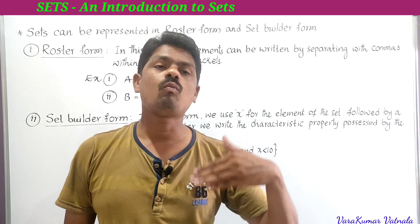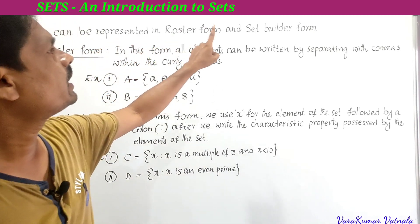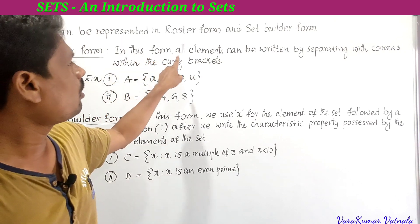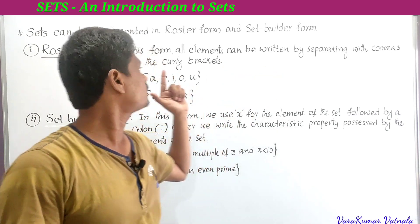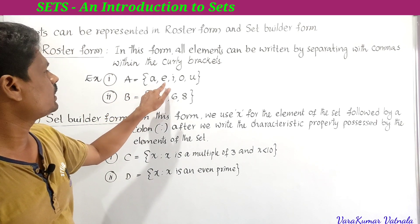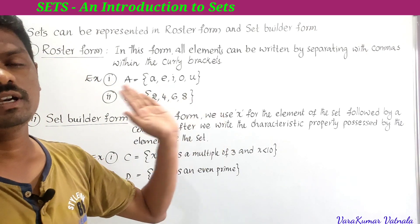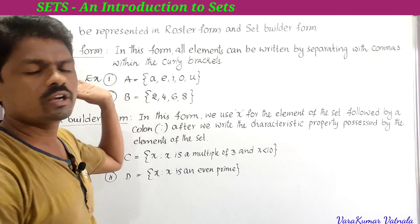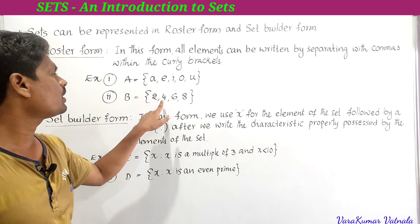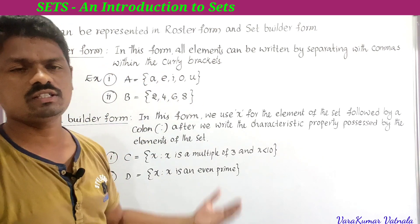In roster form, all elements are written separated by commas within curly brackets. Example 1: A = {a, e, i, o, u}. Example 2: B = {2, 4, 6, 8}. In the roster form, we list all elements present in the set within the curly brackets.